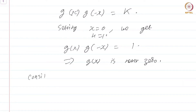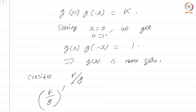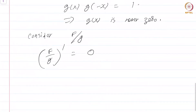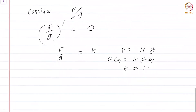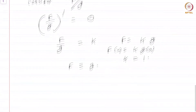Now consider the function f/g, where both f and g satisfy properties 1 and 2. Differentiating f/g: since f' = f and g' = g, the numerator fg' − f'g = fg − fg = 0, so the derivative is 0. Thus f/g = k for some constant, meaning f = k·g. Setting x = 0: f(0) = k·g(0) gives 1 = k·1, so k = 1. We have shown f = g; uniqueness is established.